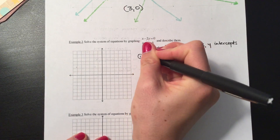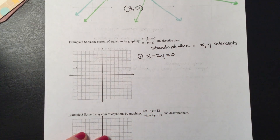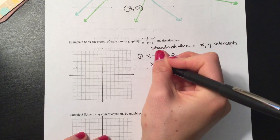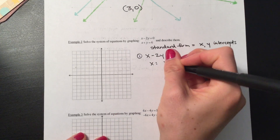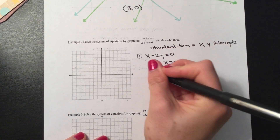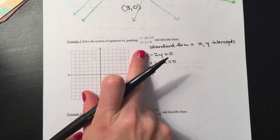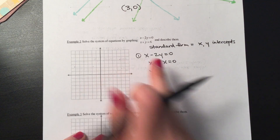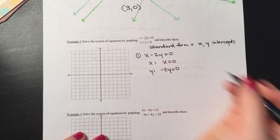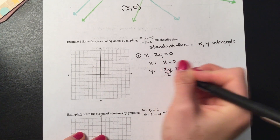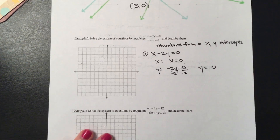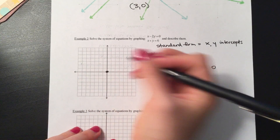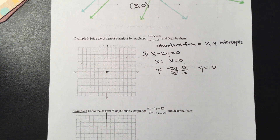Let's start with the first equation: x minus 2y equals zero. We start by finding the x-intercept — plug in zero for y, and we just end up with x equals zero. For our y-intercept, plug in zero for x, so we have negative 2y equals zero. Dividing both sides by negative two, zero divided by any number is still zero. So my x-intercept is zero and my y-intercept is also zero — both at the origin.